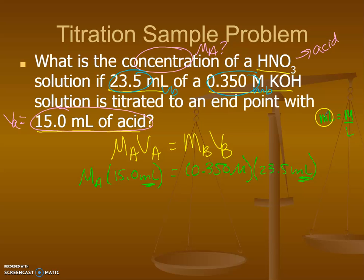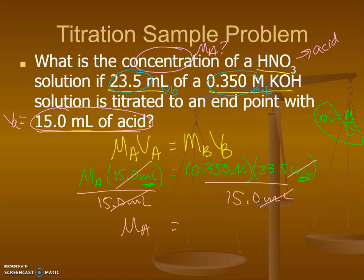As long as this is in milliliters and this is in milliliters, you don't have to worry about the milliliter and moles per liter and this stuff canceling out. Just like I went over before, it's okay if they're both in milliliters. But make sure that the volumes are the same. If this one would be in liters and this one would be in milliliters, you would have to change one of them or else it's not going to mathematically work out. So, how do I solve? I want MA by itself. So, I divide by 15 milliliters on both sides. And my milliliters and milliliters will cancel out. So, in my calculator, I am going to put 0.350 times 23.5 divided by 15 and hit enter. And my molarity of my acid is going to be 0.55 molar.